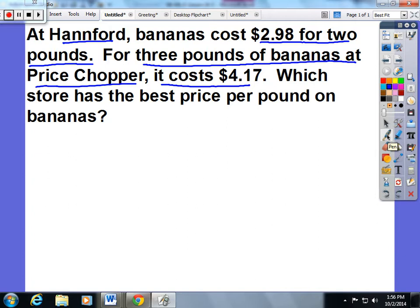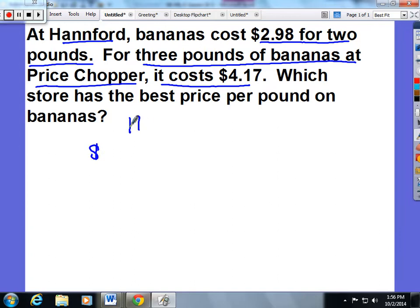At Hannaford, bananas cost $2.98 for 2 pounds. For 3 pounds of bananas at Price Chopper, it costs $4.17. Which store has the best price per pound on bananas? We're going to get students to start thinking about equal fractions, Hannaford and Price Chopper, and we're going to set it up money per pound.